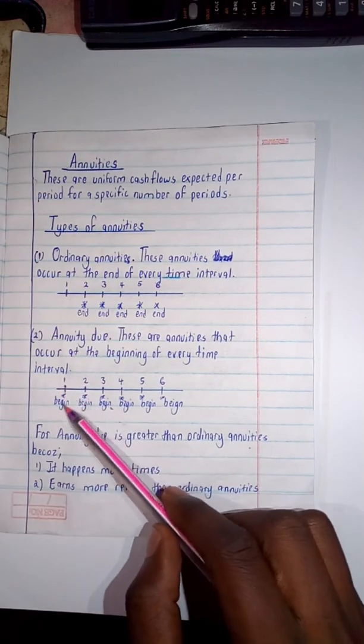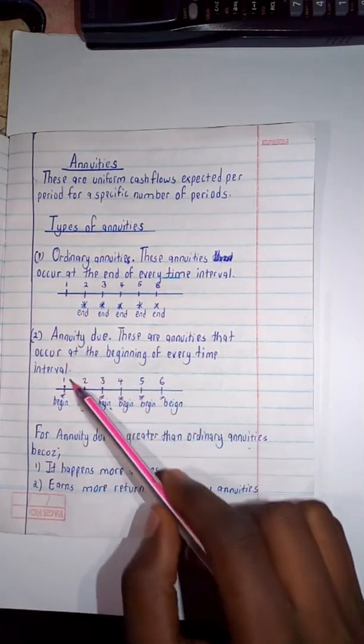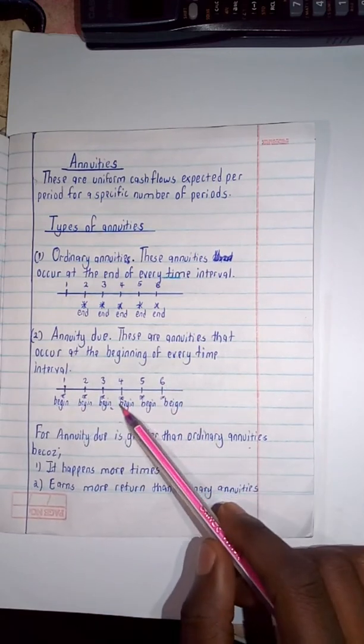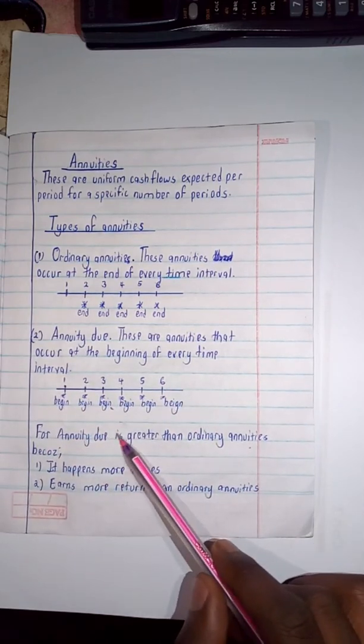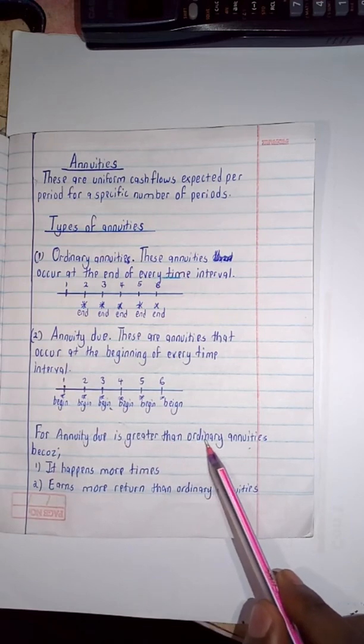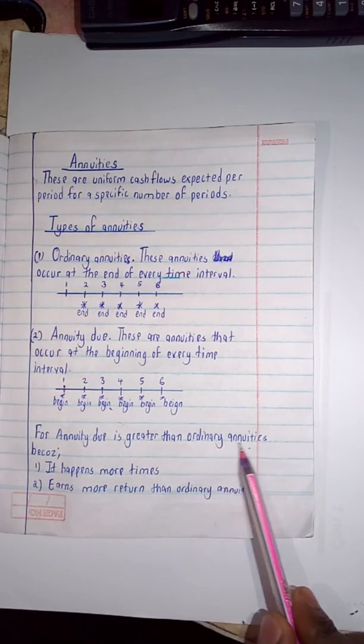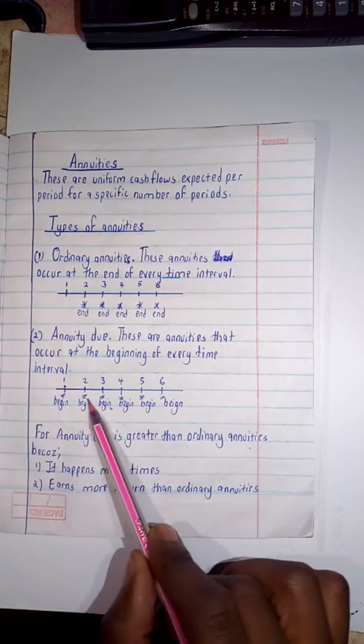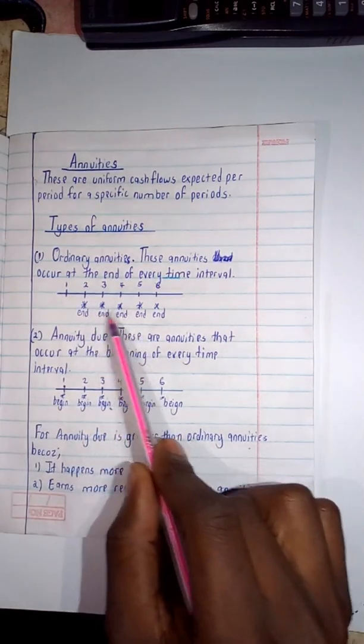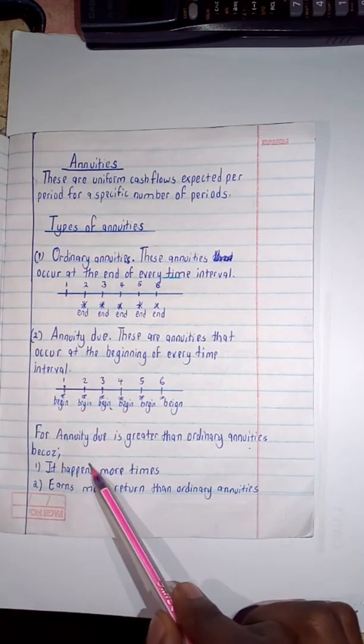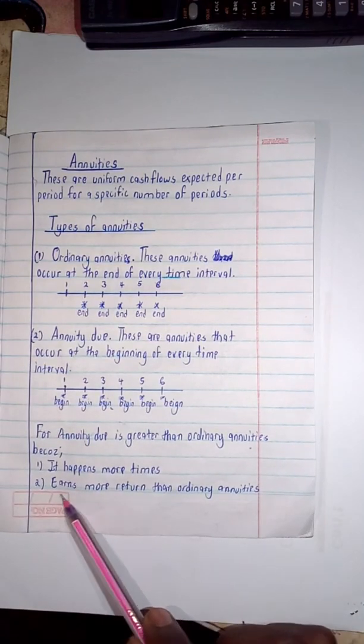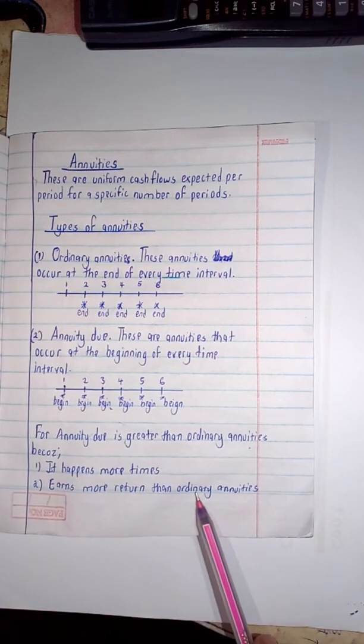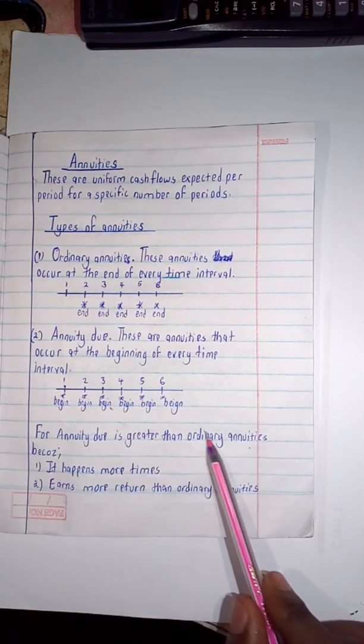Now with this, they begin at the beginning. For example, if you're having one, two, three, four up to six, they occur at the beginning, meaning that for annuity due it is greater than the ordinary annuities because it happens more times. It earns more return than the ordinary annuities.